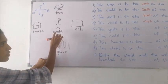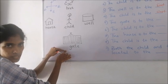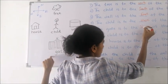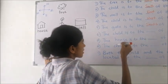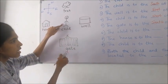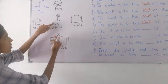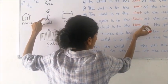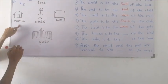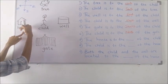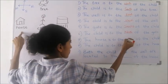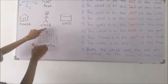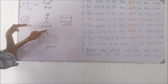The gate and the child: the gate is located to the south direction of the child. The child is located to the north direction of the gate. The house is to the west direction of the child, and the child is to the east direction of the house.